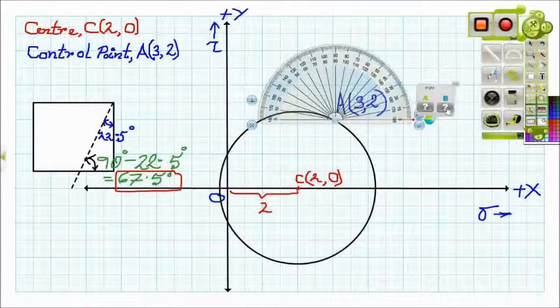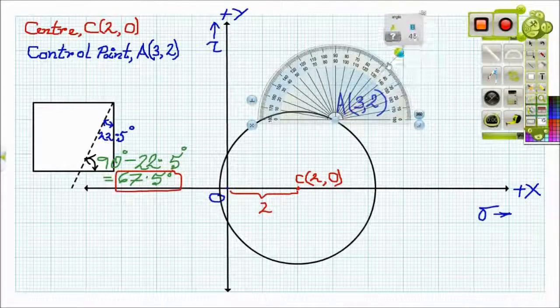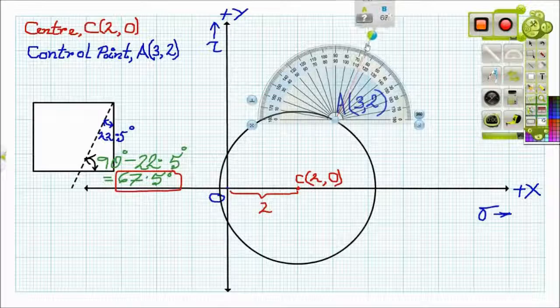For that, we need to draw a line which makes an angle nearly 67 degree with the horizontal.